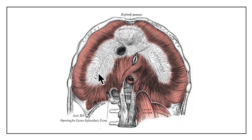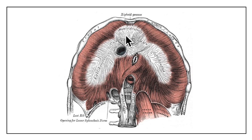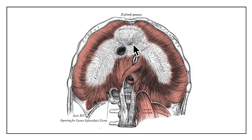Now let's learn about the insertion of the diaphragm at the central tendon. The central tendon lies below the pericardium and is trilobar in shape, made up of three leaflets: the middle leaflet, the right leaflet, and the left leaflet. The middle leaflet is triangular in shape with its apex directed towards the xiphoid process. The right and left leaflets are tongue-shaped and curve laterally and backwards, the left being a little narrower than the right.